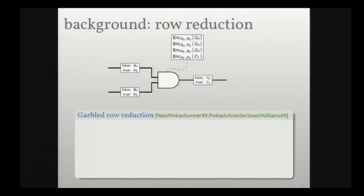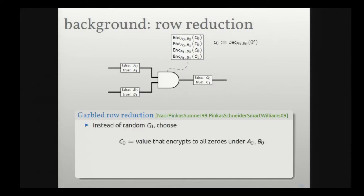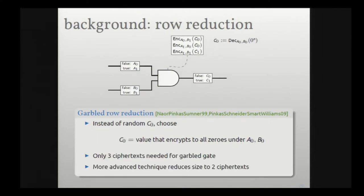At the moment I showed you a construction where the garbled gates cost four ciphertexts. We chose all the wire labels randomly, but what if I chose the output wire label C0 to be the value that when encrypted under A0 and B0 gives the all-zeros ciphertext? By choosing C0 in that way, it ensures that the first ciphertext in this picture is always all zeros, meaning I don't have to send it. So I really only have to send three ciphertexts.